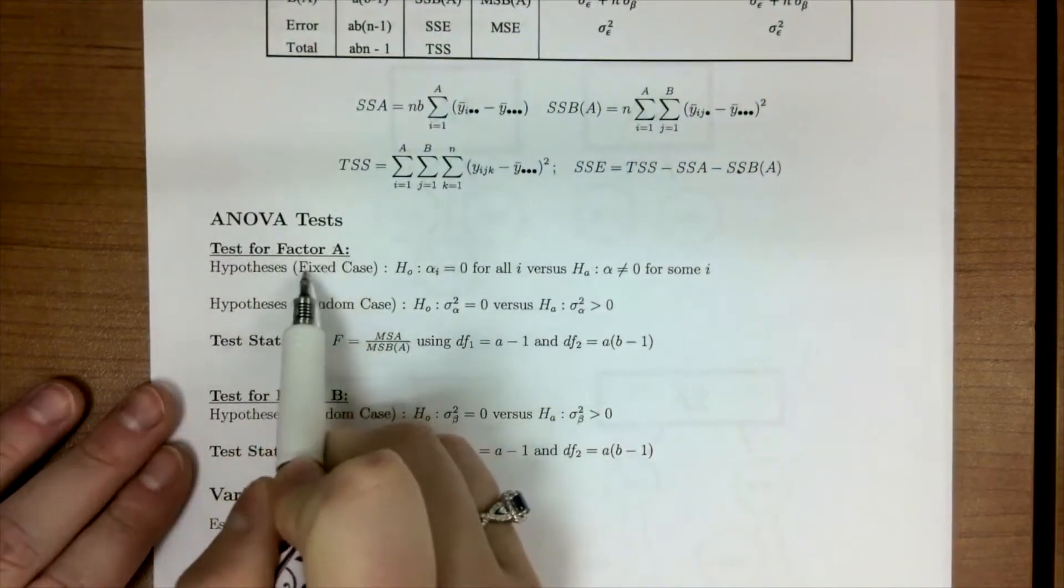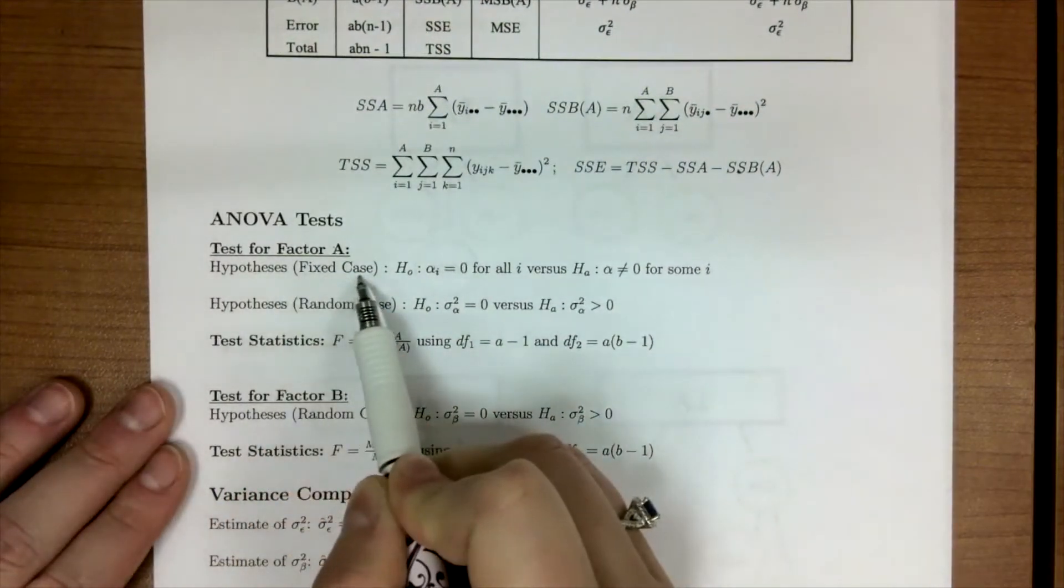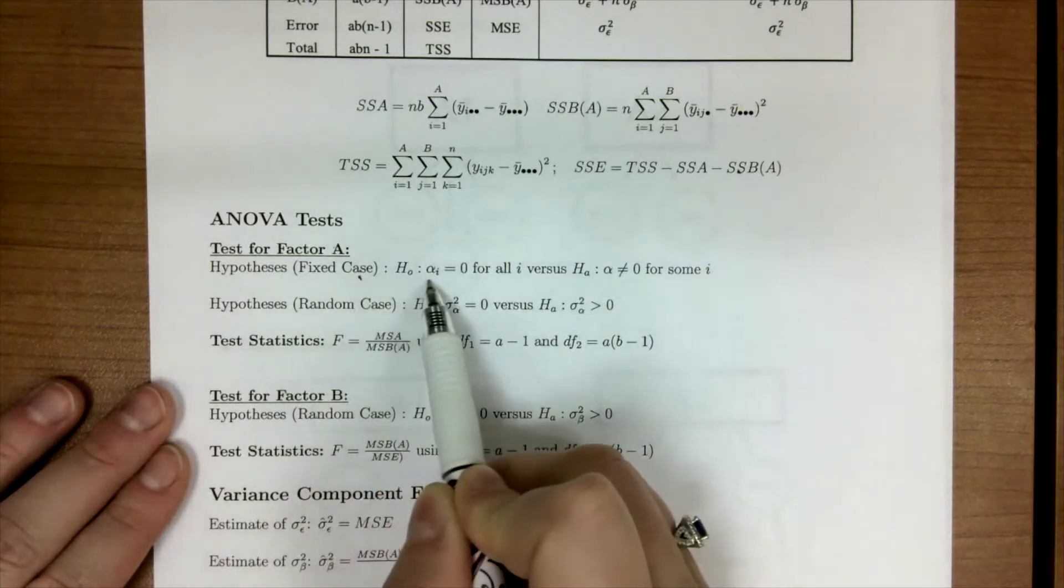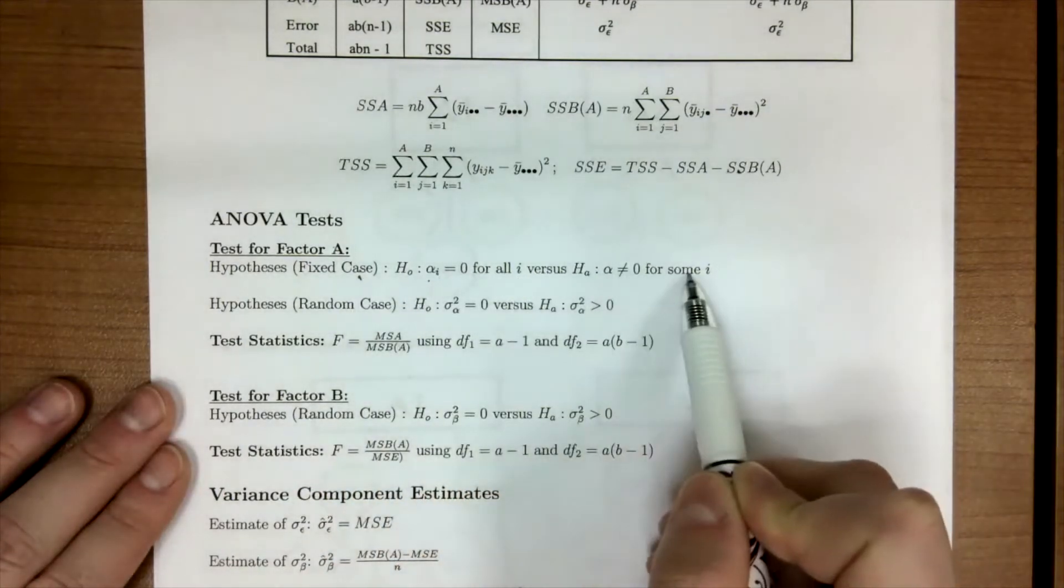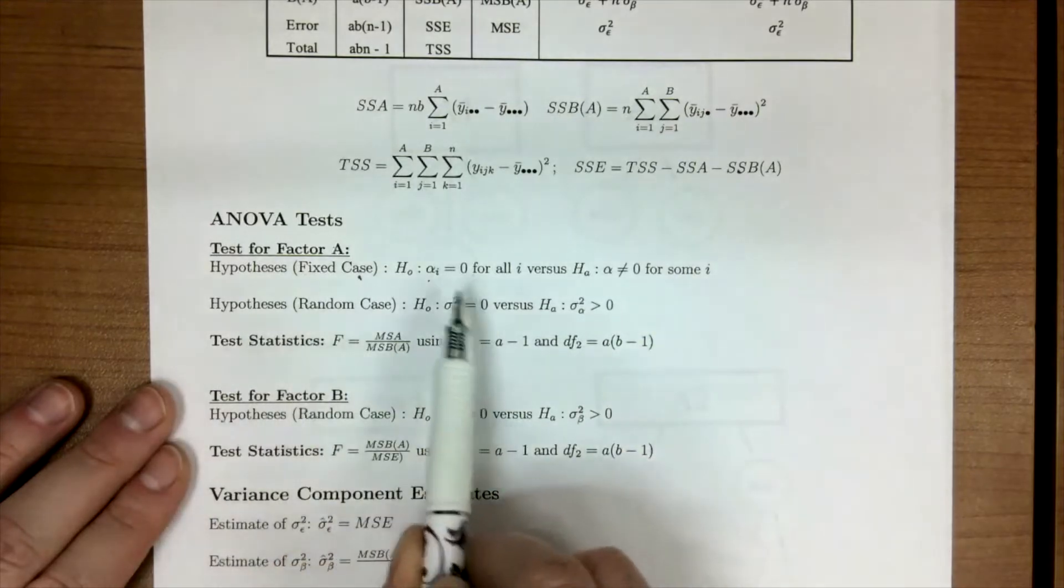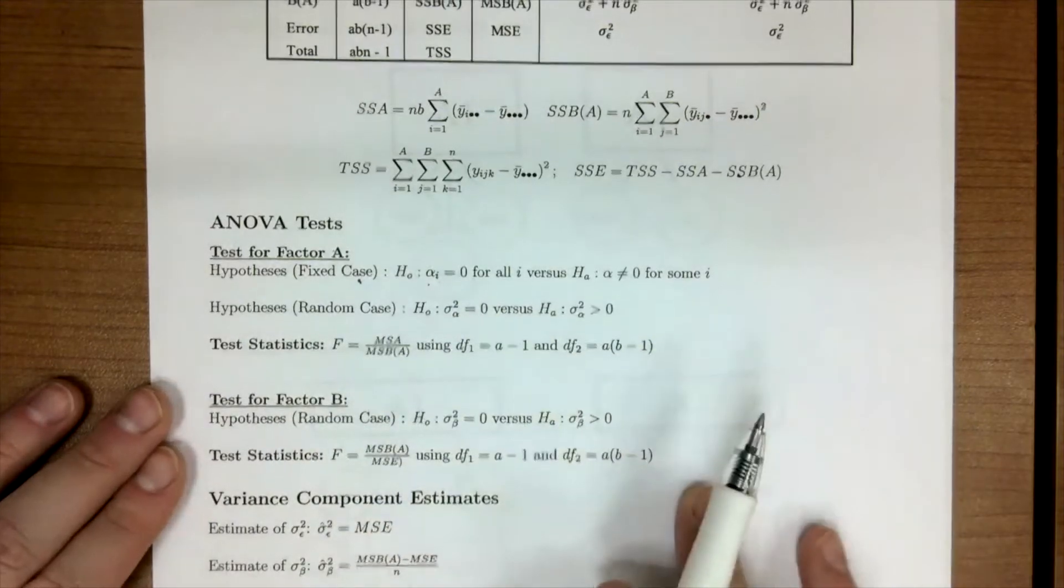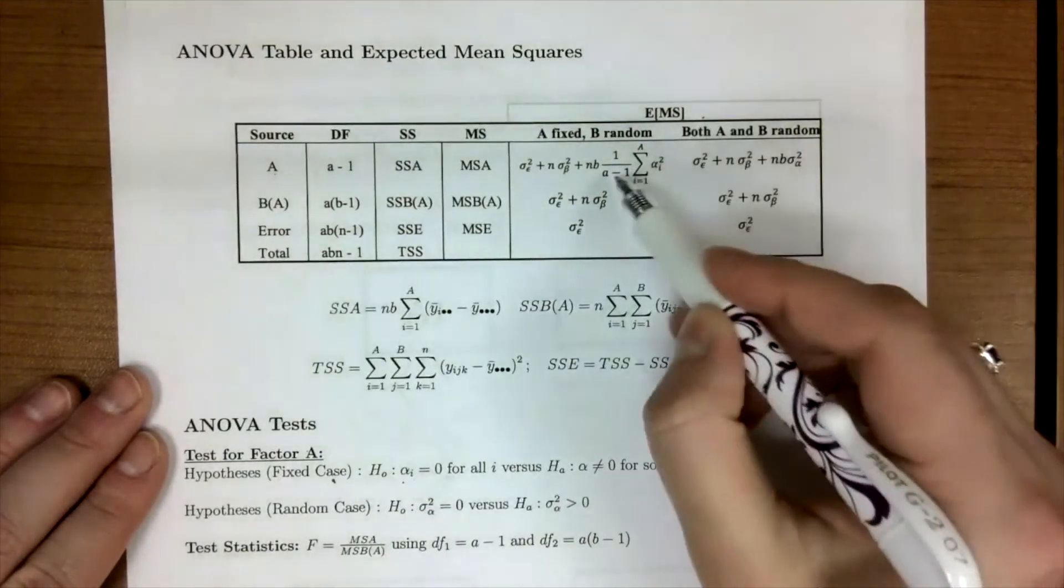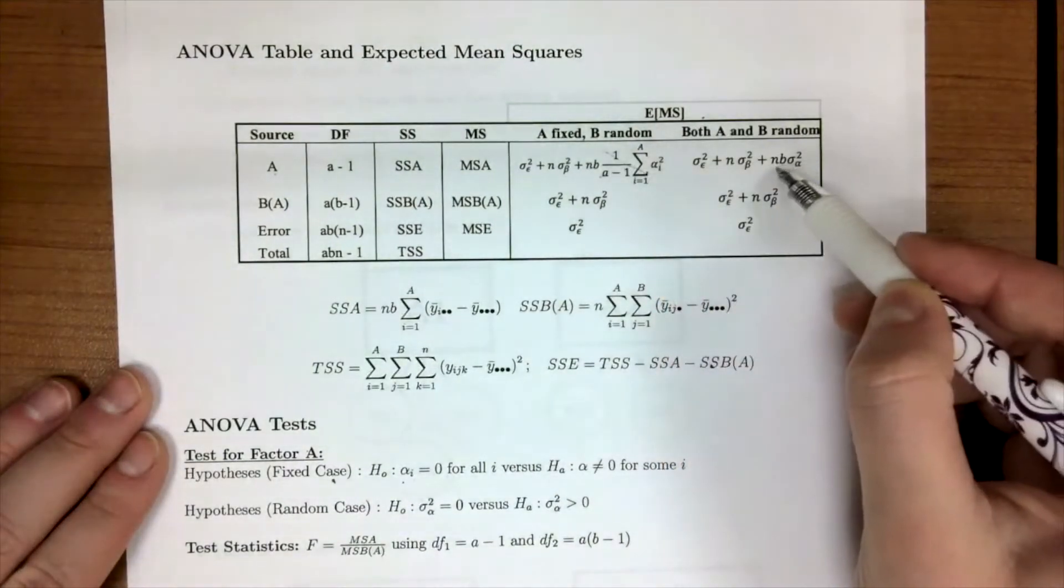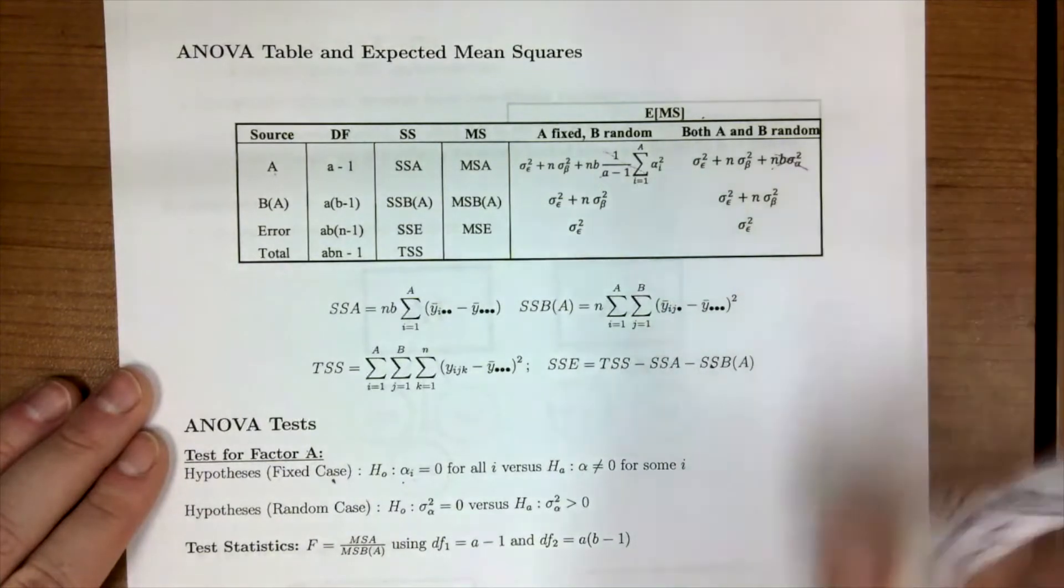So for factor A, if we were in a fixed case, our hypotheses would be looking at α_i equal to zero for all of them versus not equal. And if it was a random case, we'd be looking at the variance. In either case, under the null, both these terms, that term or this term, depending on your case, would be cancelled out.